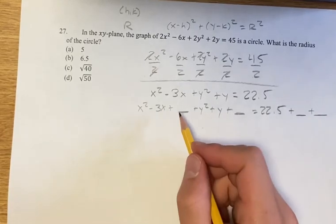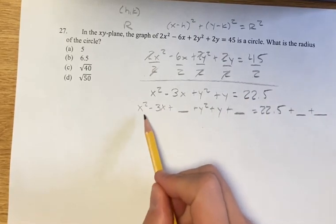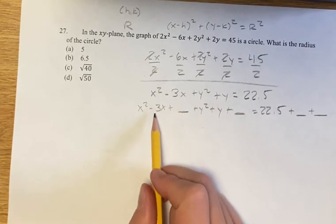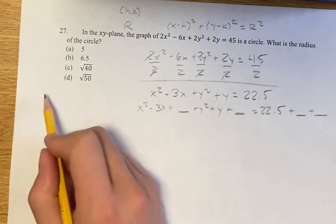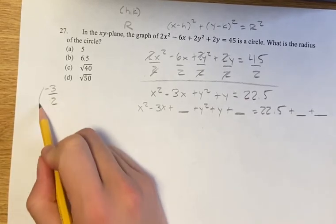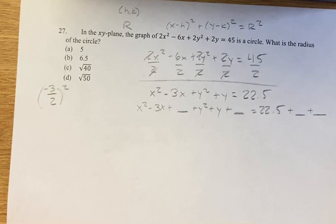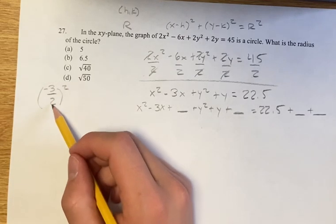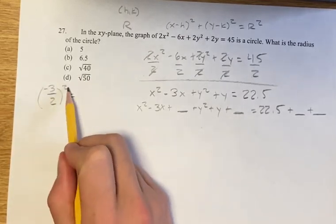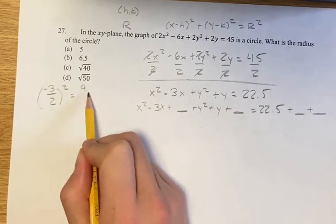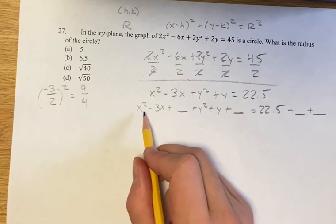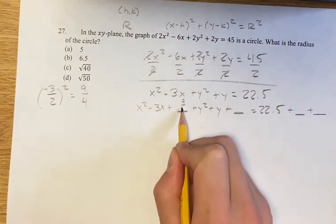So how do you complete the square? When your x squared term has a coefficient of 1, you find the number by dividing the middle coefficient by 2 and squaring it. For x, it's negative 3 divided by 2, then squared. Negative 3 squared is 9, 2 squared is 4, so that gives us 9 over 4. So we have x squared minus 3x plus 9 over 4.